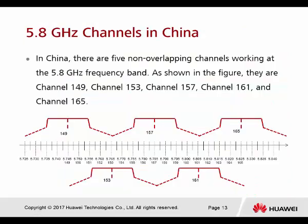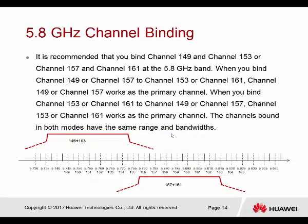In China, there are five non-overlapping channels working in the 5.8 GHz frequency band: channels 149, 153, 157, 161, and 165. Channel bonding is also recommended in the 5 GHz band because the 5 GHz has many channels with less crowded channel edges. We can aggregate channels within 5 GHz, for example combining 149 plus 153, or 157 plus 161.